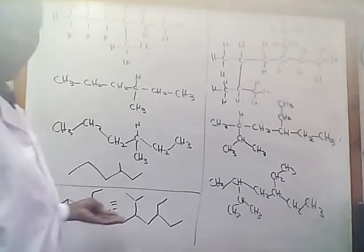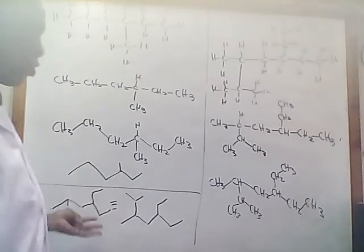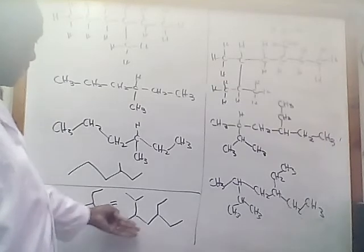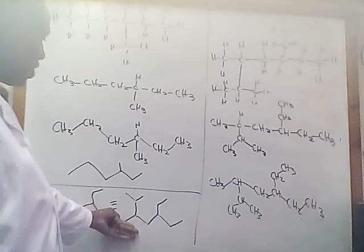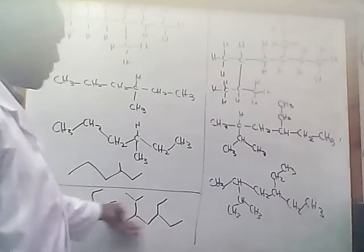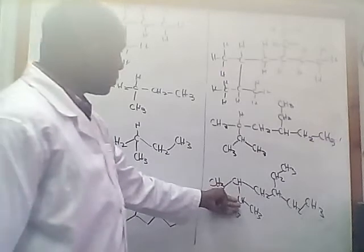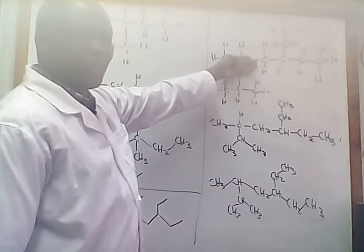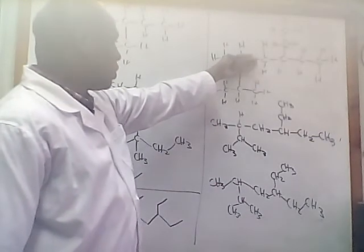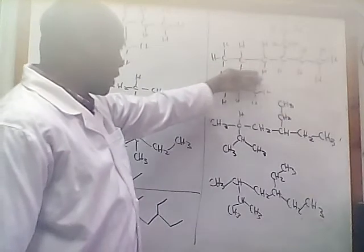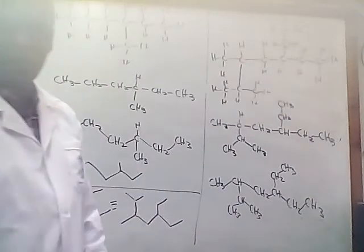So now it is clear on how you can convert this representation to this representation, and also to this representation of the Lewis structure. And if you are given the Lewis structure, how you can convert it back to the bond-line structure.